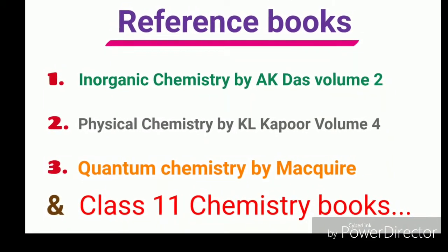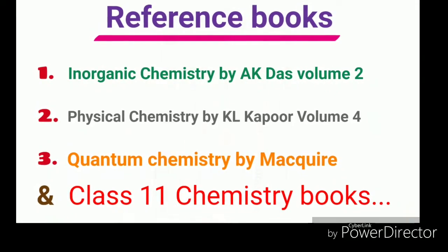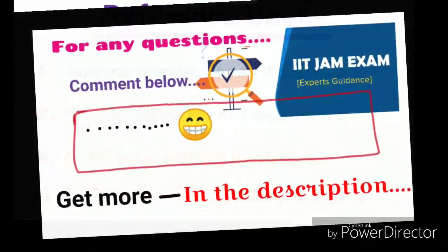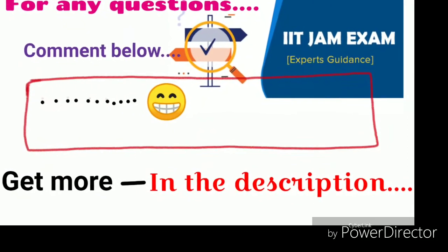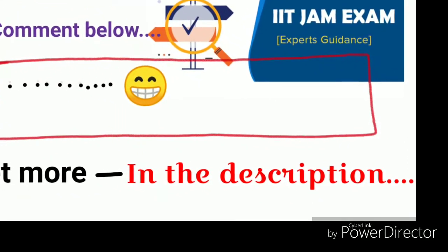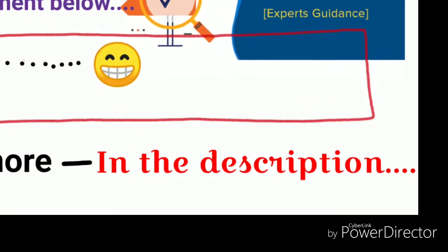And your class 11 standard chemistry book is also helpful to clear the basic concept and it's really helpful. So this is all about the chapter of atomic and molecular structure. If you have any questions, then ask in the comment box and get more about IIT JAM in the description. Also, thanks for watching.